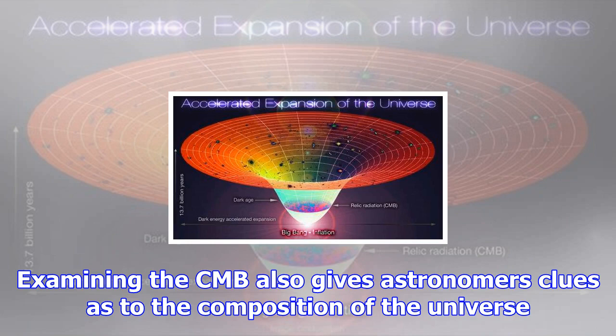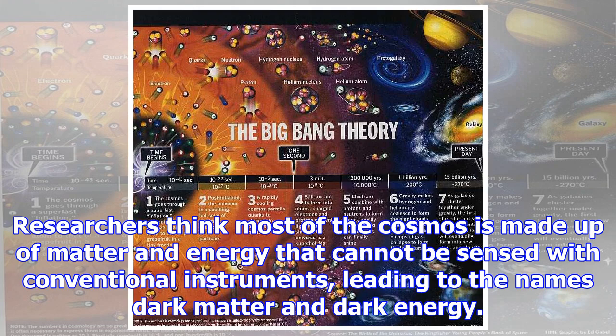Such as why the Southern Hemisphere appears slightly redder or warmer than the Northern Hemisphere. The Big Bang theory says that the CMB would be mostly the same, no matter where you look.